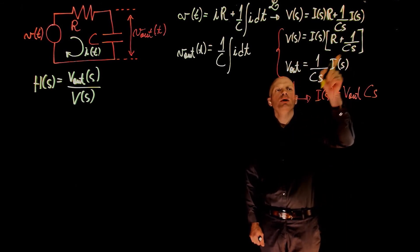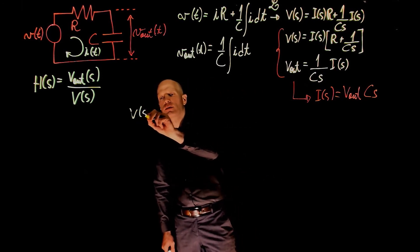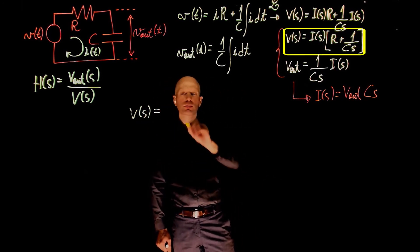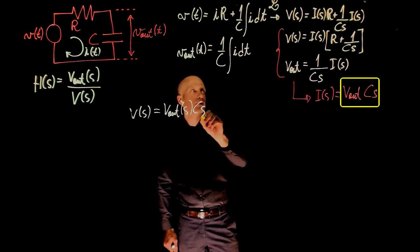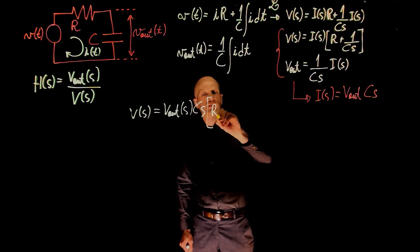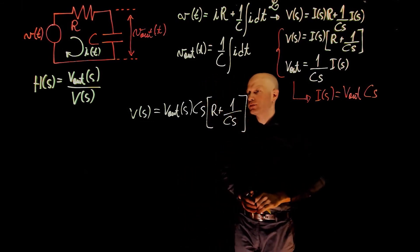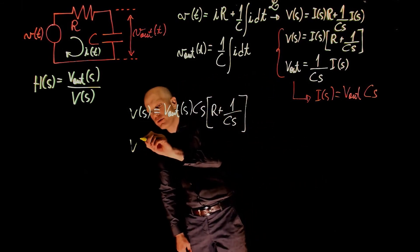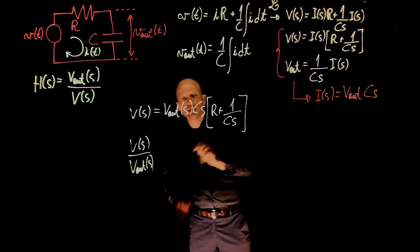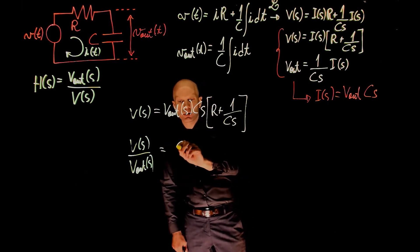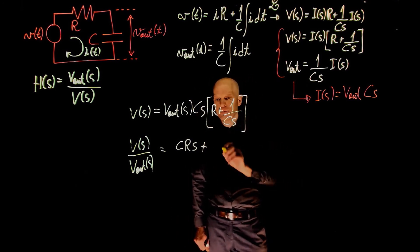We can now rewrite the first expression and replace I of s with the expression we just obtained. So V of s becomes V out of s times Cs times R, plus 1 over Cs, which simplifies to V of s over V out of s equals RCs plus 1.